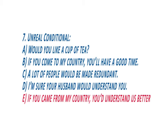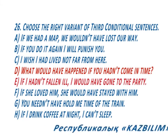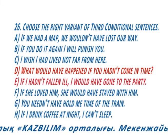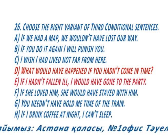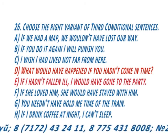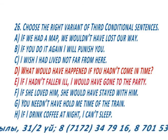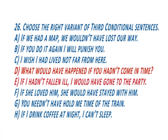Question 26: 'Choose the right variant of the third conditional sentence.' The formula is if + past perfect, and the second part is would + present perfect. The answer is D: 'What would have happened if you hadn't come in time?' Another example: 'If I hadn't fallen ill, I would have gone to the party.'